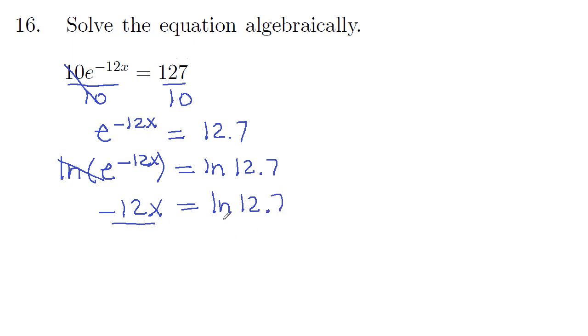And then divide off that negative 12 on both sides. They cancel on the left. So x is natural log of 12.7 divided by negative 12.